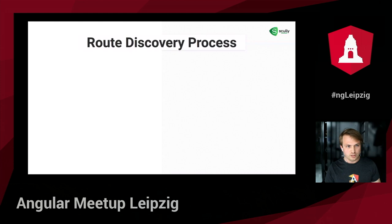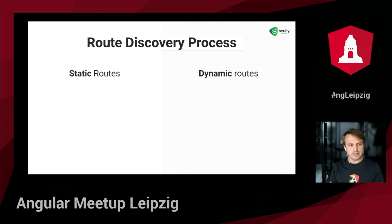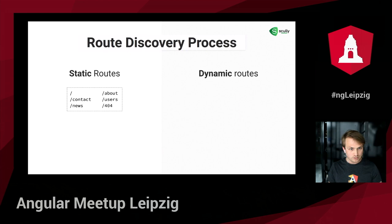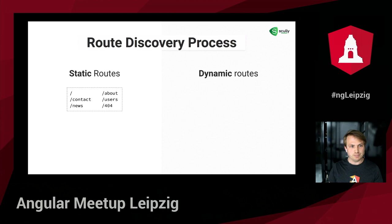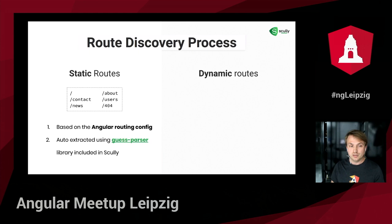The route discovery process is an essential part of Scully — this is where it begins, because before we can pre-render our pages we need to know which pages to pre-render. We can make a clear distinction between two types of routes: static routes and dynamic routes. Static routes are pages that do not have a dynamic part in their URL — for example the about page, contact page, or overview pages like news or users. Their URL will not change. Scully can discover those routes based on the Angular routing configuration, auto-extracted using the Guess parser library included in Scully.